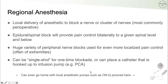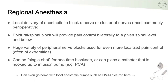Regional anesthesia involves local delivery of anesthetic and is most commonly used in a perioperative setting. Epidural and spinal blocks provide pain control bilaterally to a given spinal level and below — used for major surgeries or labor and delivery. There are also a variety of peripheral nerve blocks used for more localized pain control on the extremities. Regional anesthesia can be a single-shot blockade or delivered continuously via a catheter and infusion pump. Overall, it's a great tactic that helps reduce the necessity and volume of opioids used.